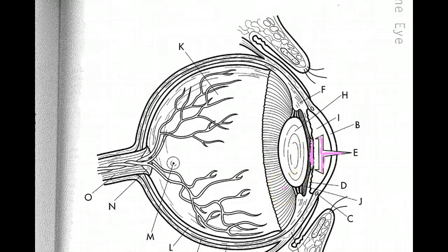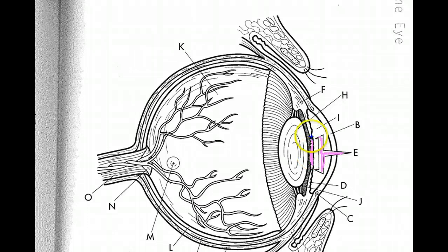The next thing we learned about was the iris. I'm going to make the iris in blue, simply because I have blue eyes, so it's easier to remember. The way you find the iris is once you've found the pupil, the area immediately above the pupil and the area immediately below the pupil are the iris.